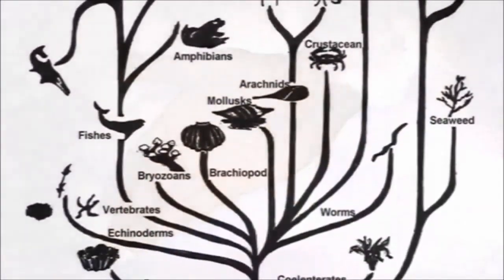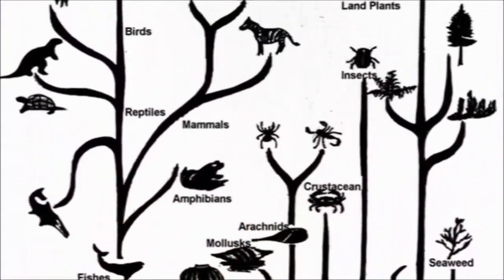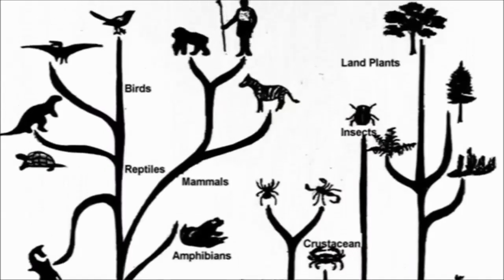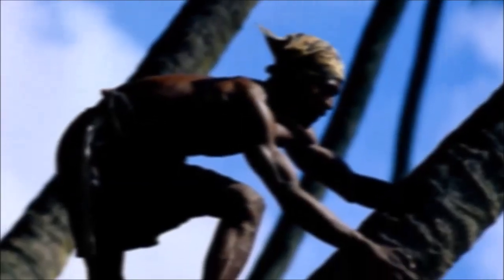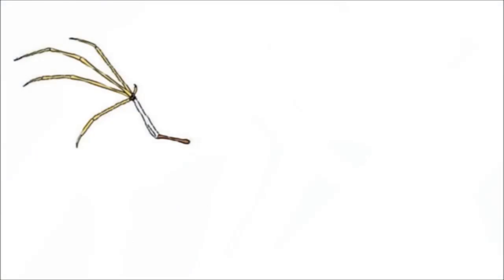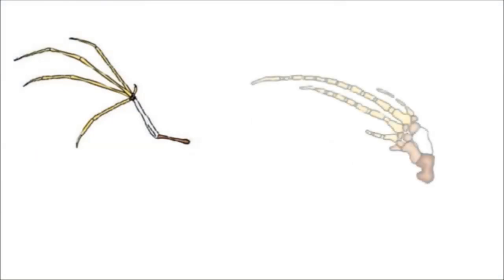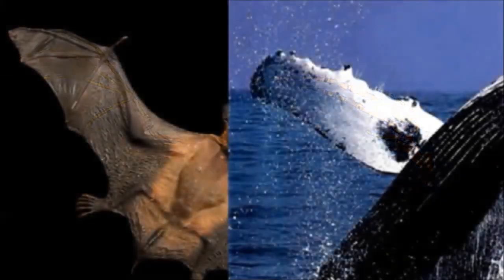In their defense, theists often claim God created life according to a plan. Therefore, it is not surprising we observe similarities in anatomical structures between different species. Although this might explain the similarities between the forearms of primates and humans, surely the best way to design the infrastructure of a bat's wing is not also the best way to build a whale's flipper. Such anatomical particularities make no sense if the structures are uniquely engineered and unrelated.